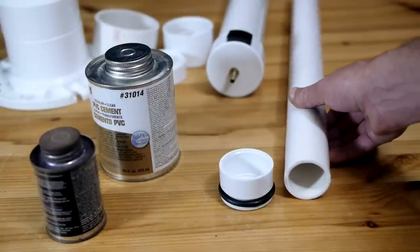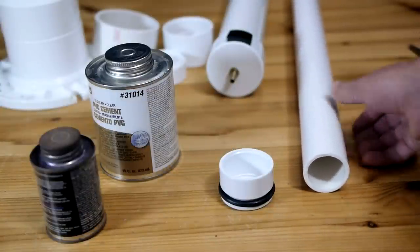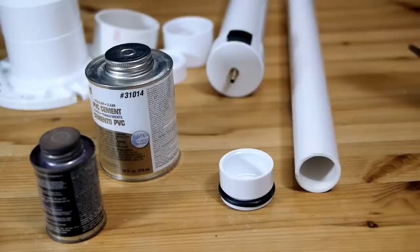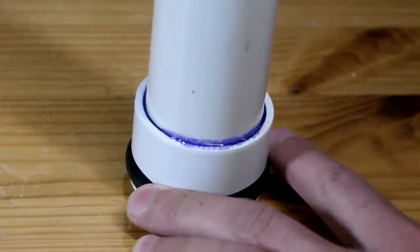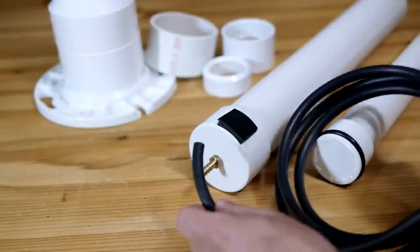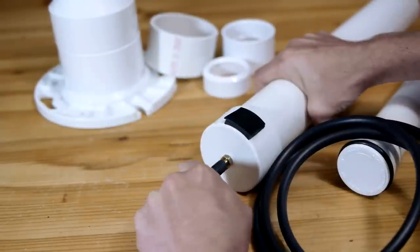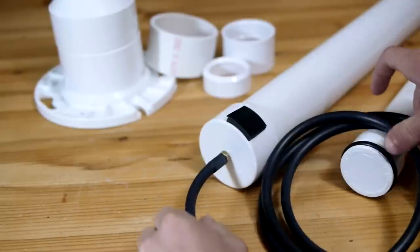Once the o-ring has been snapped into the groove, the piston is complete and it can be mounted to the pump shaft which is a 20 inch length of inch and a quarter PVC pipe. More primer and cement will get the job done nicely. Before moving on to the next step, a length of quarter inch vacuum hose should be pressed onto the brass fitting at the base of the pump.